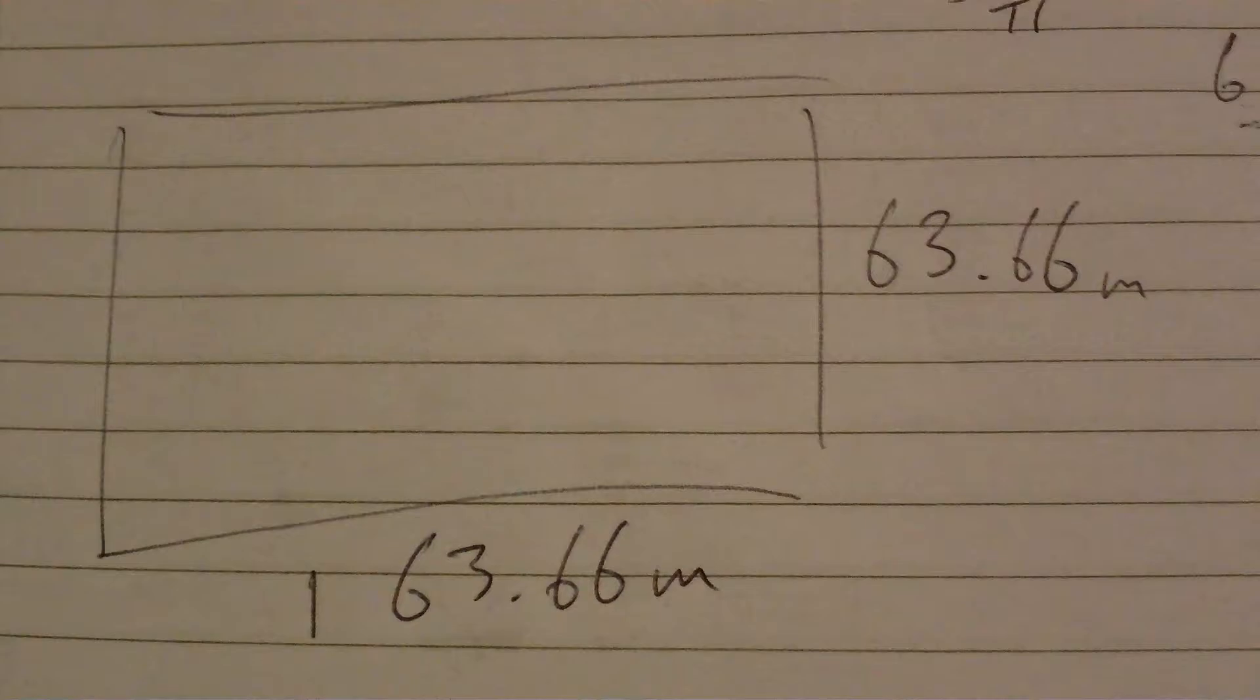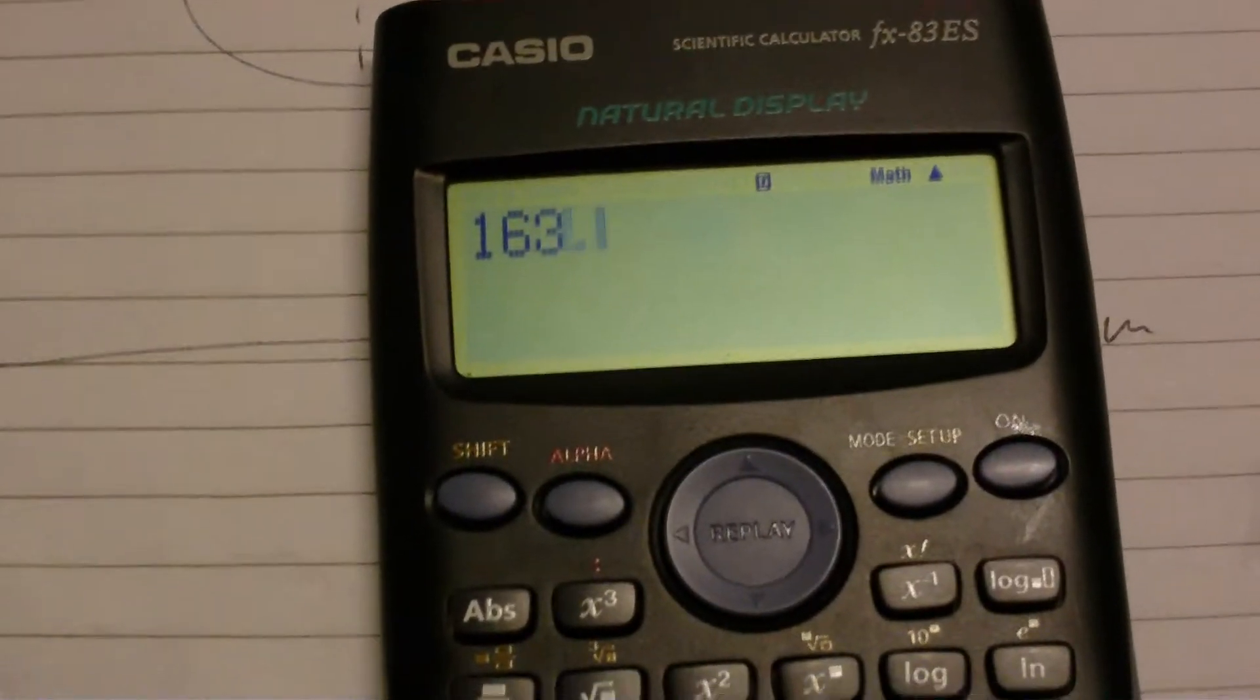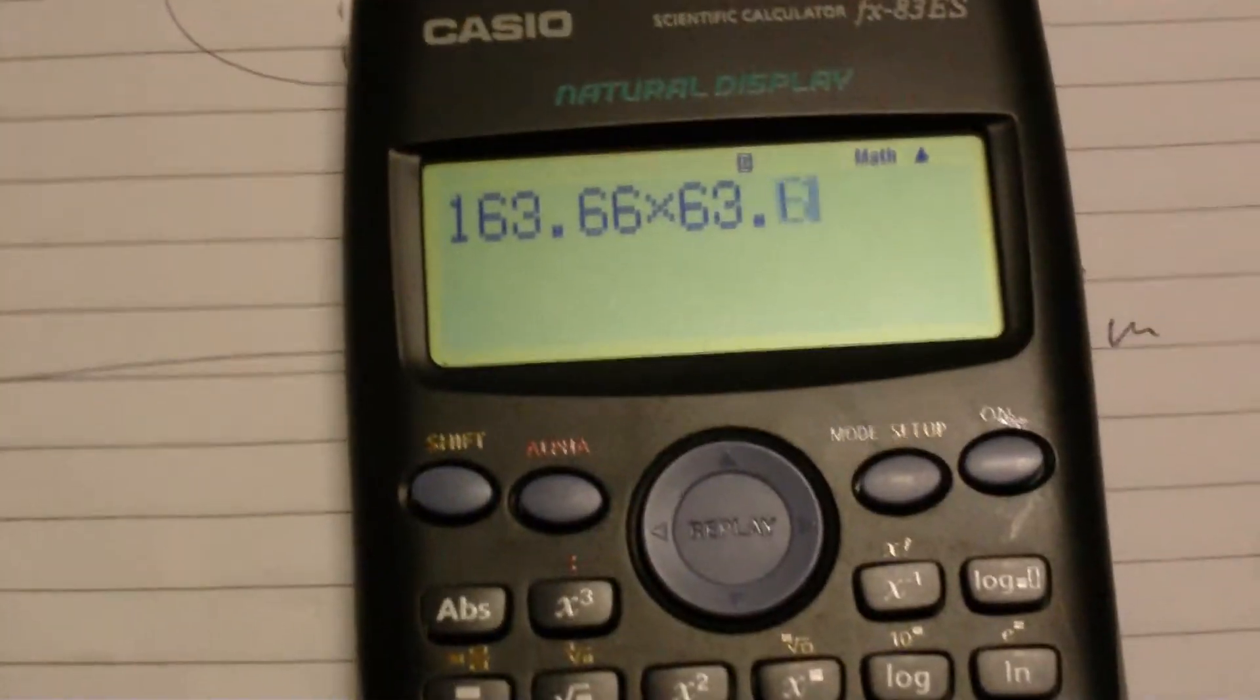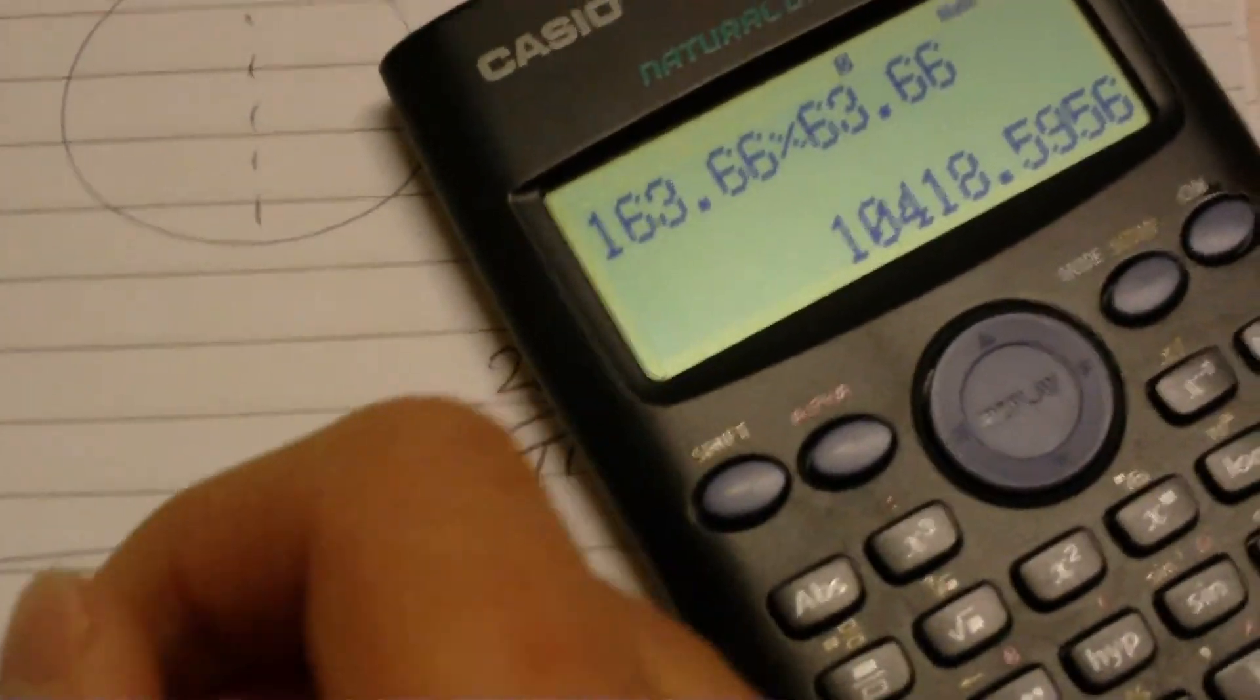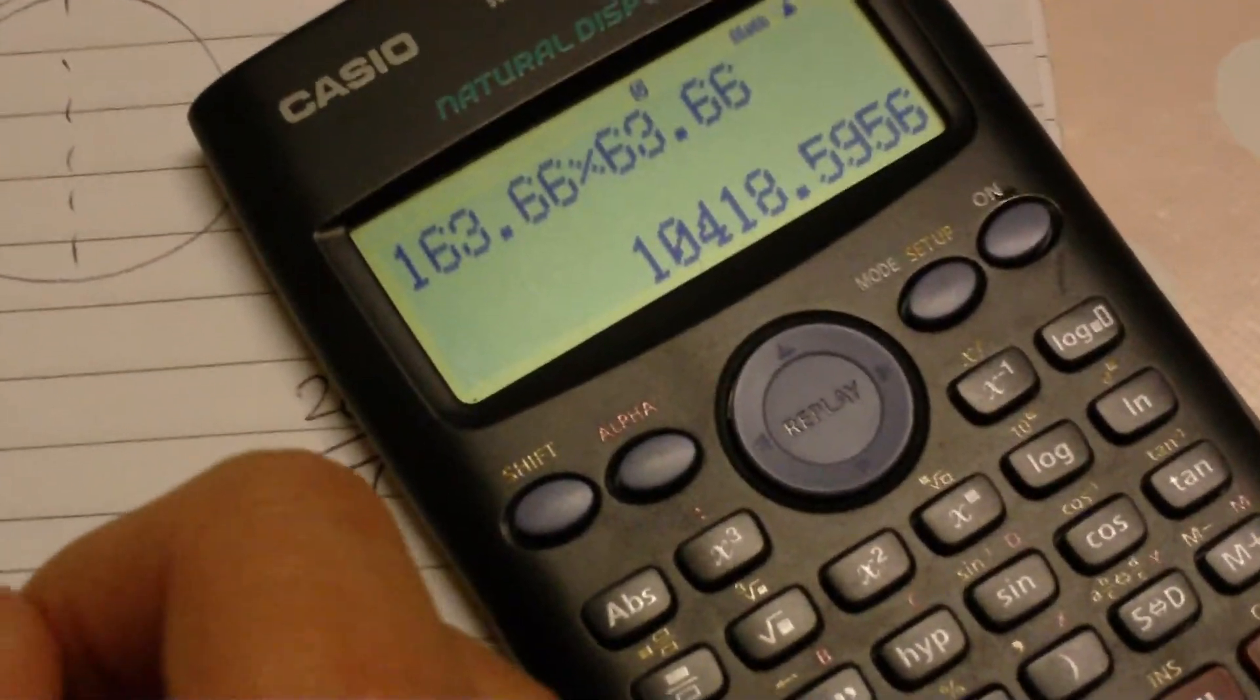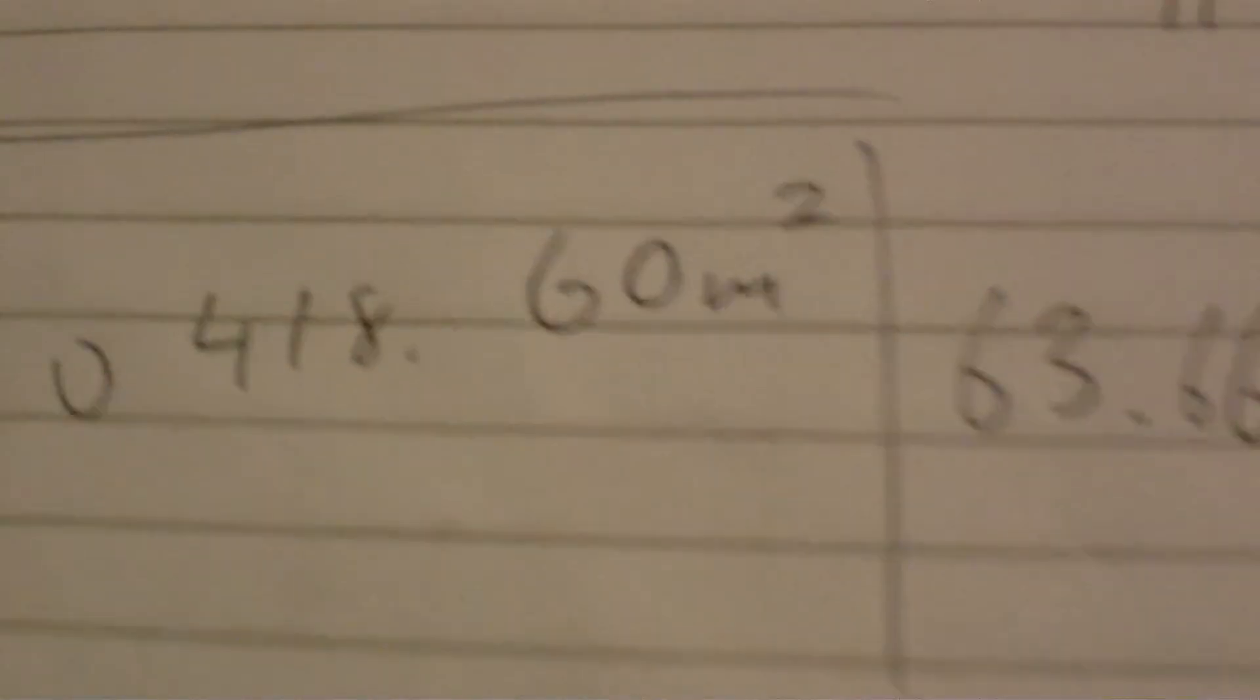So, there we go. Now we can work out the area by doing length times width. So, we put 163.66 times 63.66, and we get this nice number, 10,418.60, if we round that to two decimal places. Meters squared for that area.